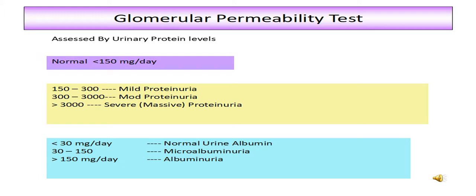Glomerular proteinuria: increased filtered loss due to glomerular damage and vascular permeability. Overflow proteinuria: increased circulating concentration of low molecular weight proteins. Tubular proteinuria: decreased reabsorptive capacity due to tubular damage.